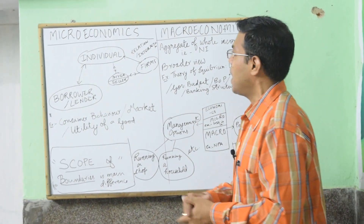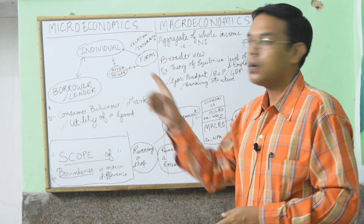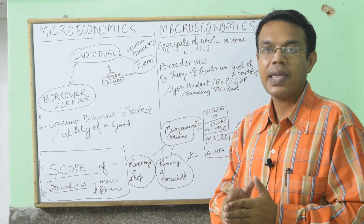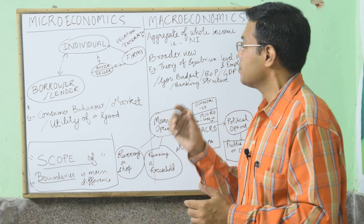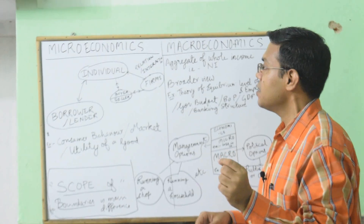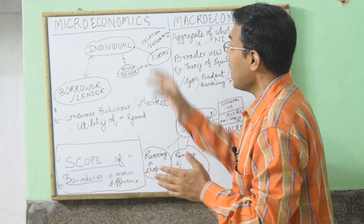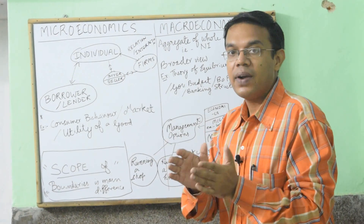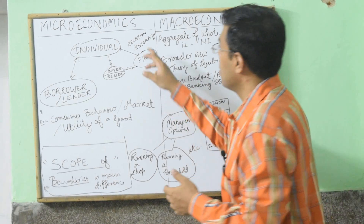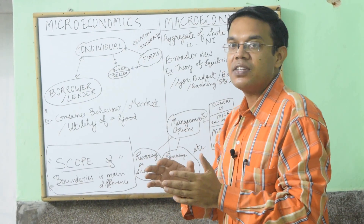Microeconomics deals with an individual. The word individual here means that an individual can be a man, can be a household, can be a company, etc. Microeconomics deals with an individual unit — a household, an individual, or a company — and its relationship with the firms working in the market, and what kind of interaction they are going through.